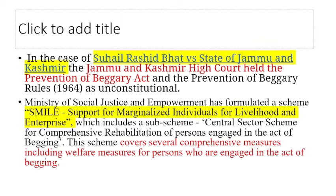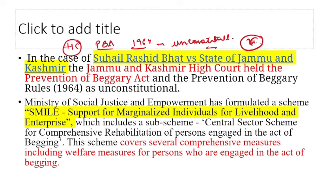In a significant case, Suhail Rashid Bhat vs. Jammu & Kashmir, the High Court declared the Prevention of Beggary Act and Prevention of Beggary Rules 1964 as Unconstitutional, reasoning that arresting and detaining beggars is no solution. The root causes — poverty, unemployment, population growth, and diminishing resources — must be addressed at the ground level.